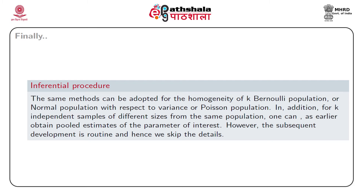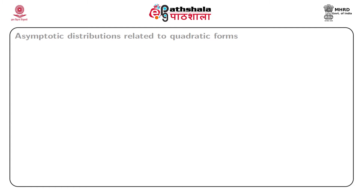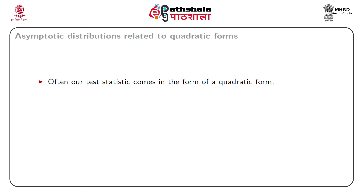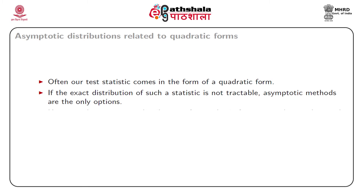We now pass to our next topic on asymptotic distributions related to quadratic forms. So far we have discussed asymptotic distributions of some linear functions or some g-function thereof, but we have not used asymptotic techniques related to quadratic forms. In this module we start with finding the asymptotic distribution considering random quadratic forms. Often our test statistic comes in the form of a quadratic form, and if the exact distribution is not tractable, asymptotic methods are the only options.